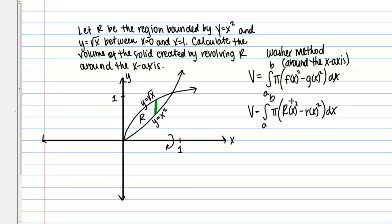F(x) is your outer radius, and g(x) is your inner radius—capital R(x) minus little r(x). Let's set up our integral. We have π, which we can put out front. Then our outer radius, which is √x, squared, minus our inner radius, which is x², squared. We're integrating with respect to x.